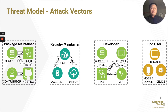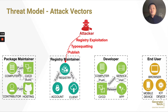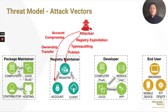We look into malware reported by the community and propose threat models in two aspects: attack vectors and malicious behaviors. For example, attackers can directly exploit the registry, or they can publish a typosquatted package or a random name package. Attackers can also abuse the accounts of existing users — they can compromise accounts or ask for ownership transfers. We have also seen attackers target upstream package maintainers by acting as a malicious contributor or as a disgruntled insider.